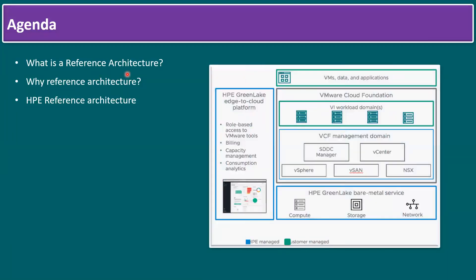Here is one sample reference architecture diagram. When we are proposing any solution architecture to a customer, first of all we should have a resource plane. The resource plane is nothing but our physical resources. In this diagram we have HPE GreenLake bare metal service providing compute, storage, and network.